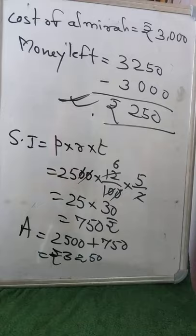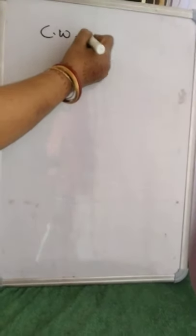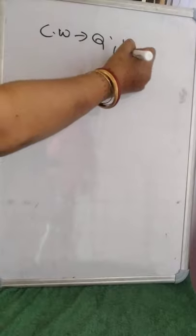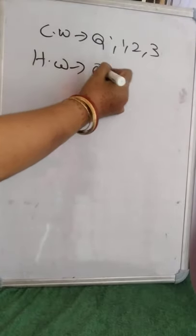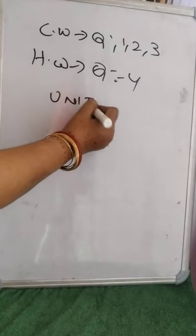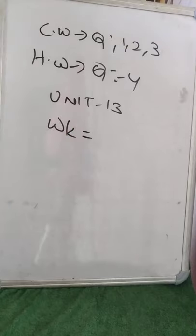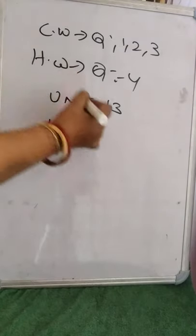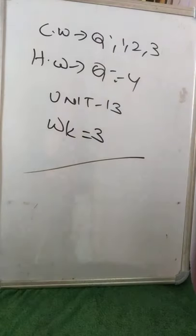So similarly, children, today's classwork is Questions 1, 2, and 3, and homework is Question Number 4. Unit Number 13, Worksheet Number 3. I think each and every question has been discussed. Bye-bye children, have a nice day.